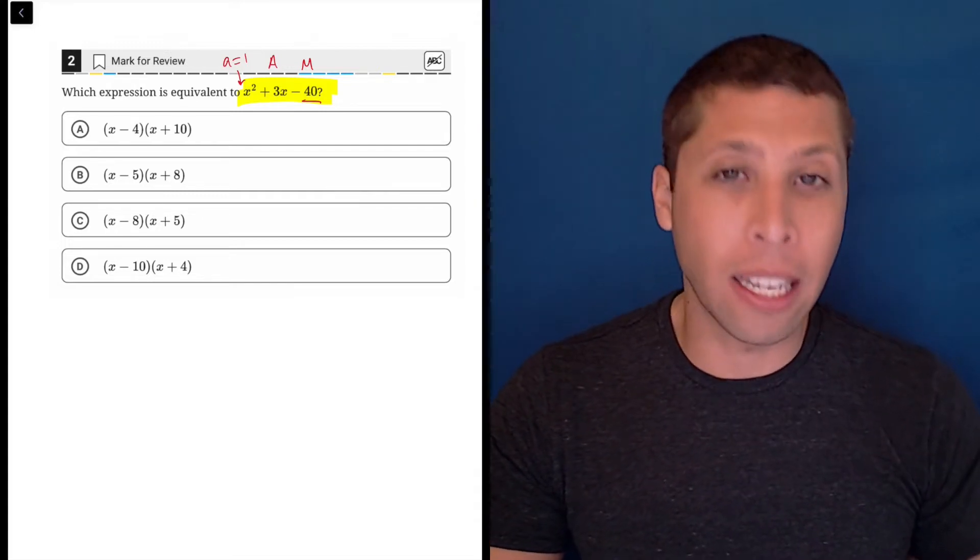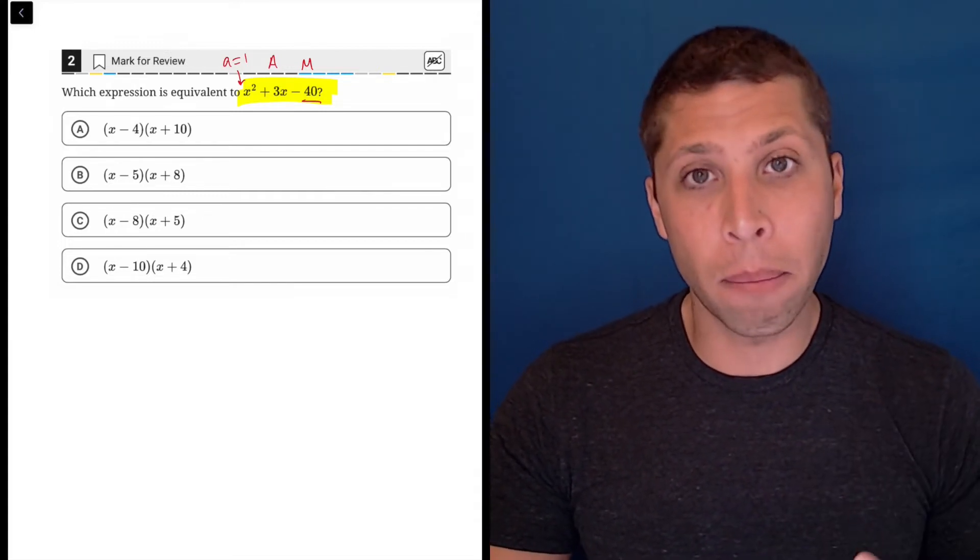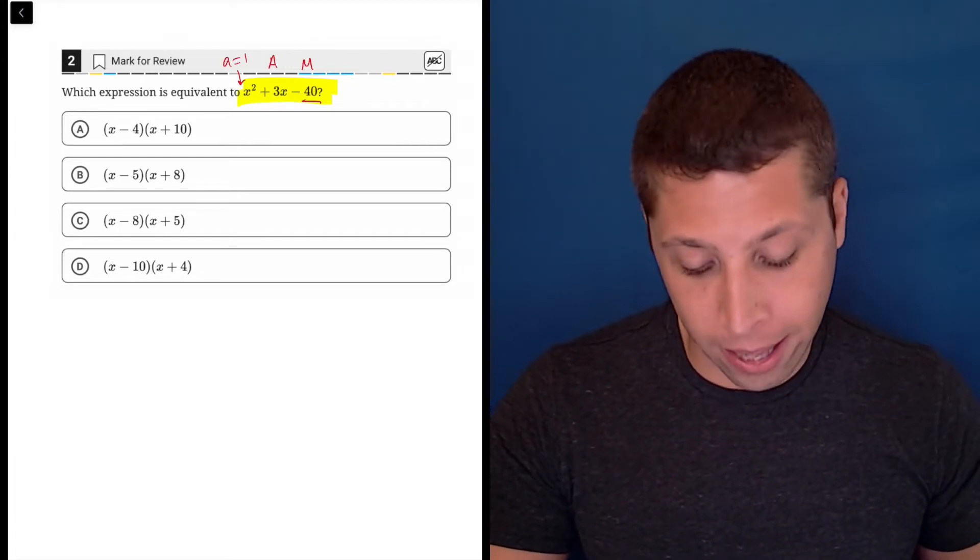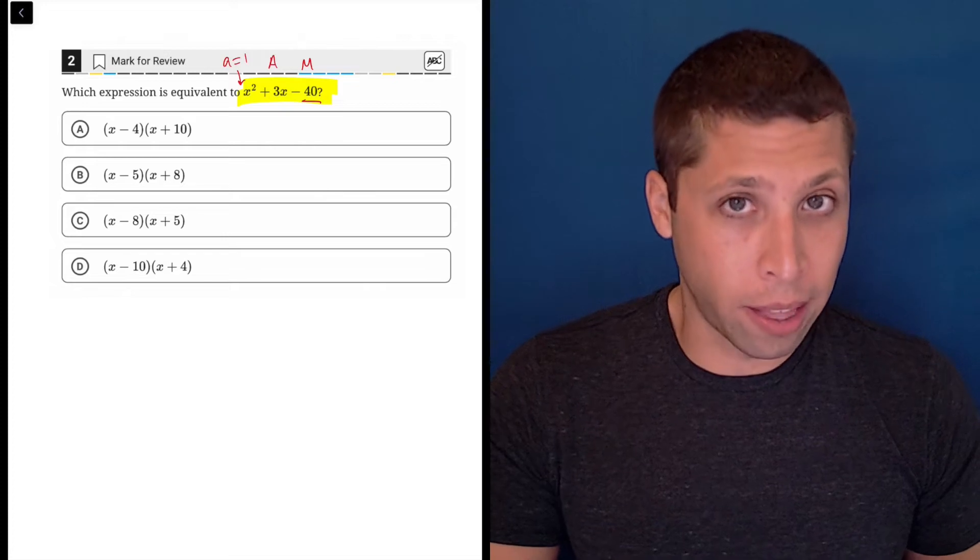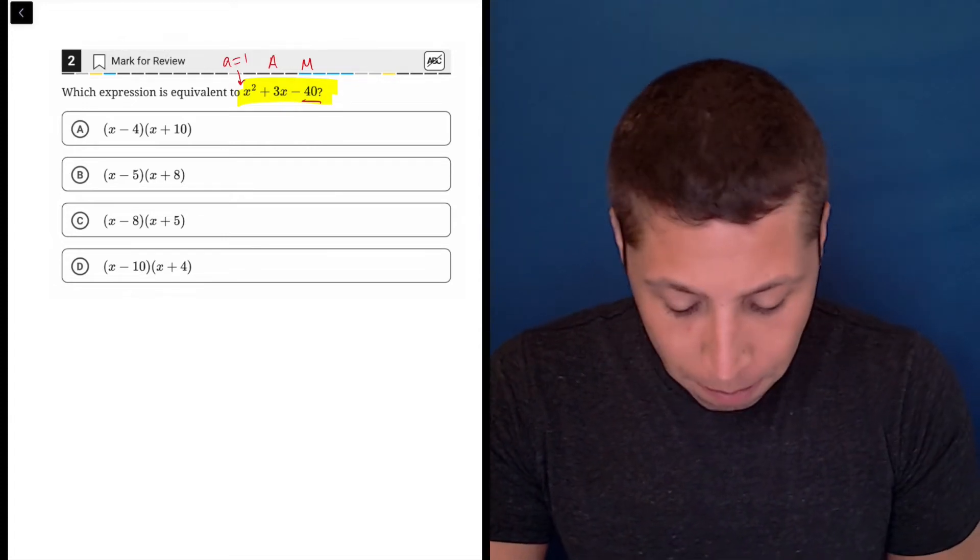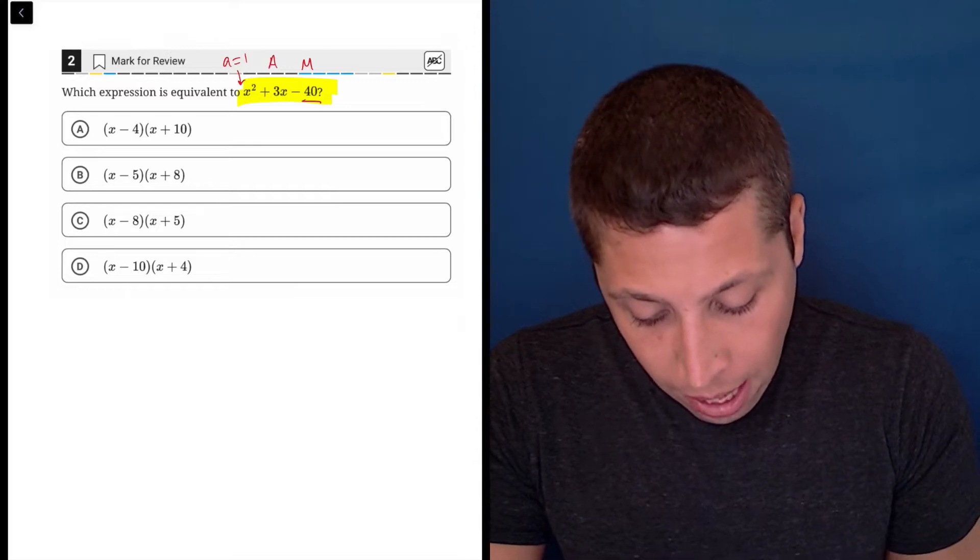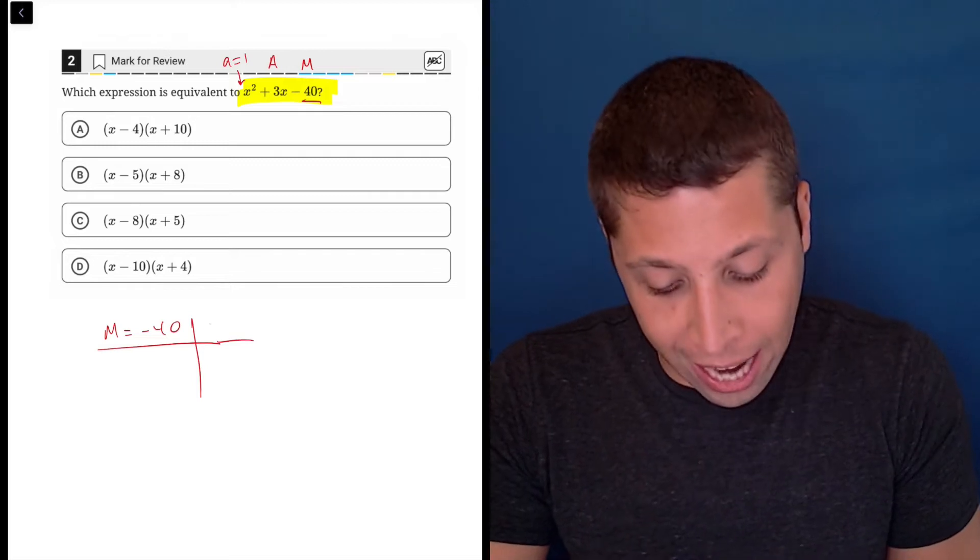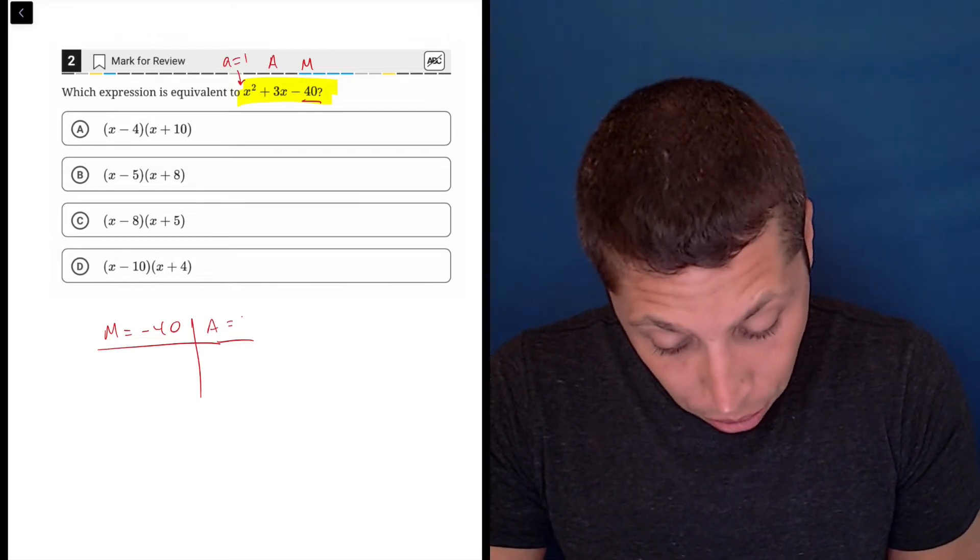Because with most numbers, there are only limited combinations that will multiply to that number. So I'm kind of just going to try things out. Some people make a little chart. Some people do something like this where they're like, okay, I need two numbers that multiply to negative 40, and then they're going to add to three.